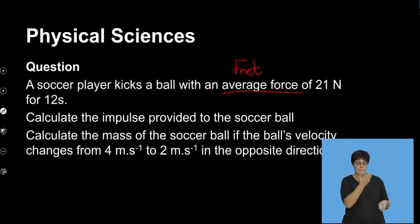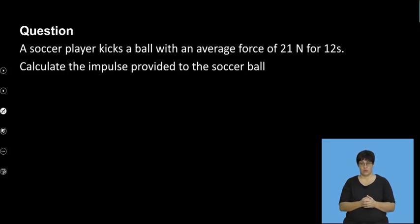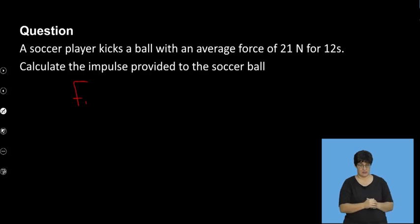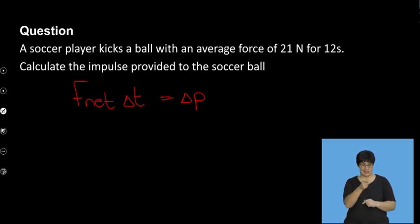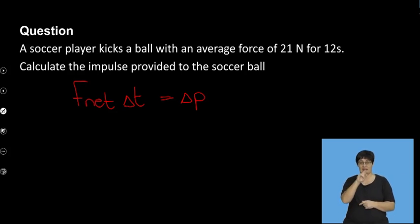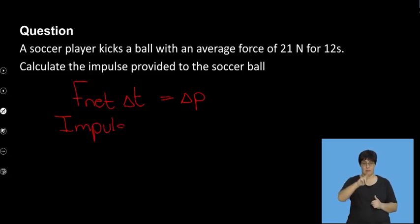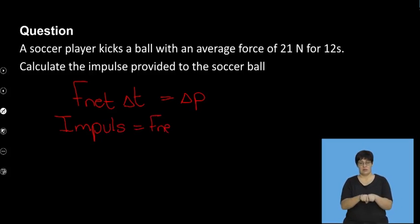Then we're going to calculate the mass of the soccer ball if the ball's velocity changes from 4 to 2 in the opposite direction. He kicks a ball with an average force of 21 newtons for 12 seconds, and we want the impulse provided. I'm not looking at changing momentum because impulse doesn't have its own symbol. If I'm going to calculate impulse using F net and delta T, I have to write out the word impulse. So we go: impulse equals F net times delta T.